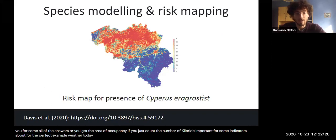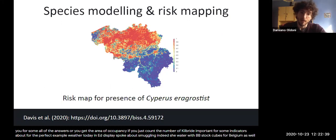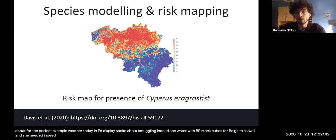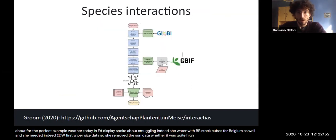Well, today Amy Davies spoke about risk maps and species modeling. Well indeed, she worked with this data, with this occurrence cube for Belgium as well. And she needed indeed data with quite precise data, so she removed some data where the spatial uncertainty was quite high. Some species interaction presented by Quentin Groom for webinar challenge use the occurrence cube here.